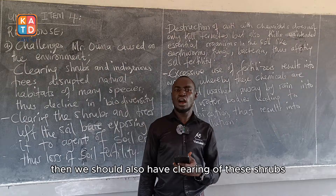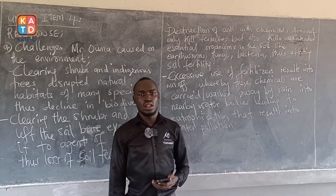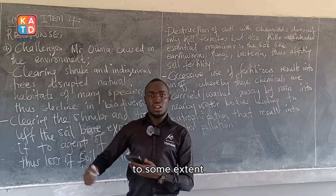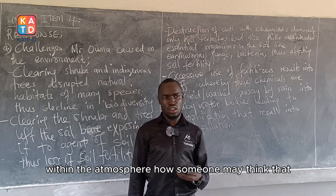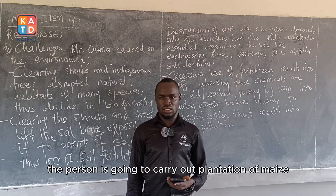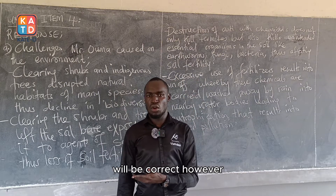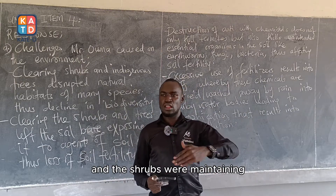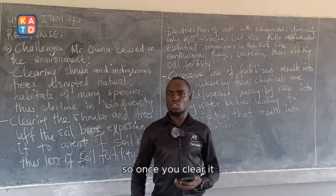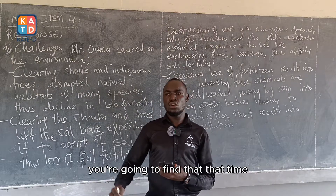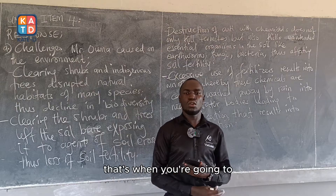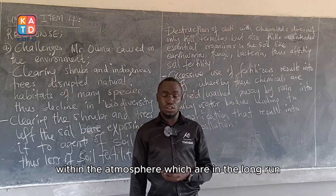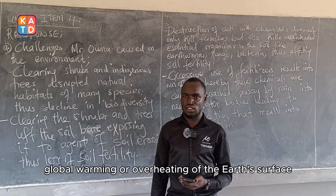Clearing the shrubs and indigenous trees also results in accumulation of carbon dioxide within the atmosphere. Someone may think that the maize plantation would still utilize carbon dioxide, but those indigenous forests and shrubs were important in regulating the amount of carbon dioxide in the atmosphere. When you clear them while preparing for maize planting, there is an increase in carbon dioxide concentration, which contributes to global warming and overheating of the earth's surface.